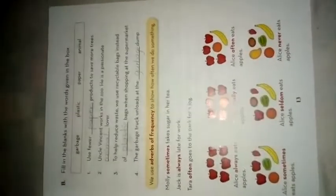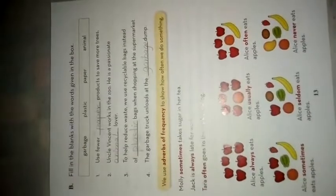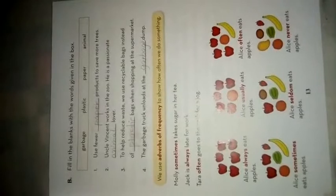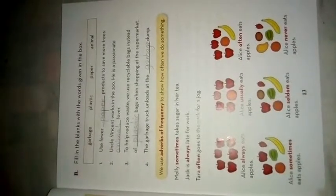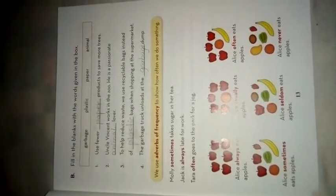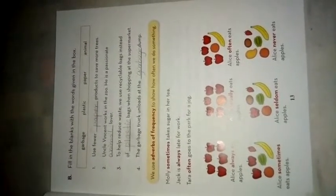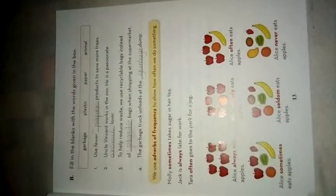Now let's start Part B: Fill in the blanks with the words given in the box. The words are garbage, plastic, paper, and animal. Number one: Use fewer paper products to save more trees. Number two: Uncle Wenkit works in the zoo. He is a passionate animal lover. Number three: To help reduce waste, we use recyclable bags instead of plastic bags when shopping at the supermarket. Number four: The garbage truck unloads the garbage dump. Dear students, learn these fill-in-the-blanks with these words properly.